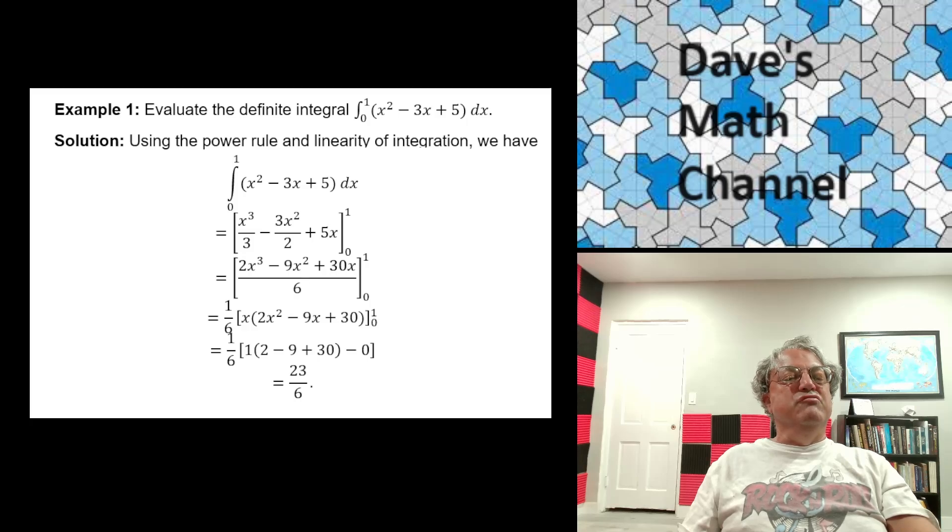So the integral of x squared minus 3x plus 5, you just integrate term by term. The integral of x squared gives you x cubed over 3. The integral of 3x gives you 3x squared over 2. We subtract that. And then finally, the integral of 5 gives you 5x. So we're left with this new polynomial, x cubed over 3 minus 3x squared over 2 plus 5x.